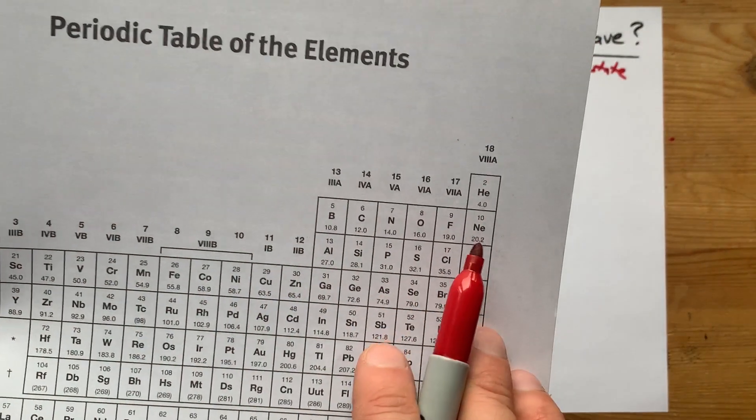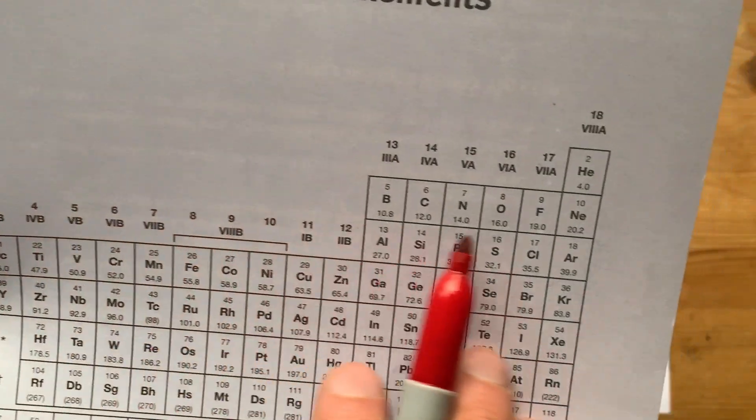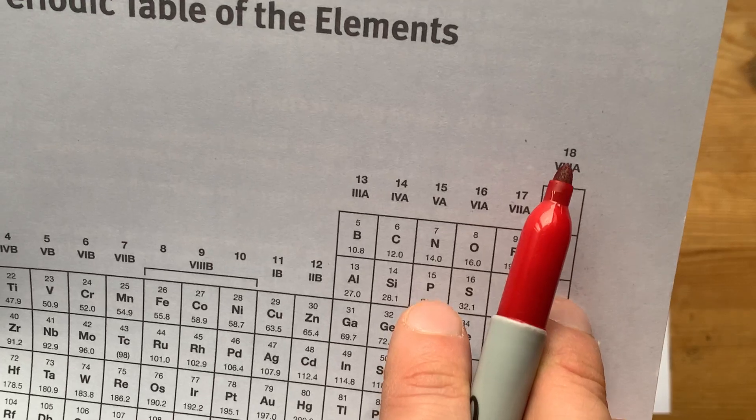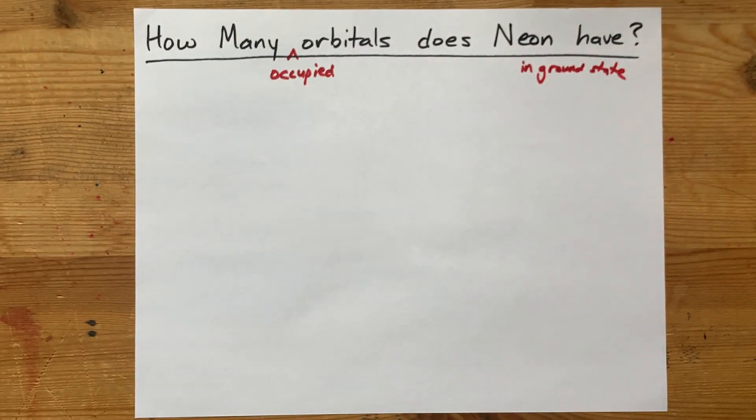Let's take a look. Neon is here in the second shell or second row of the periodic table, and it's in the eighth column, which means it has eight electrons in its valence shell.